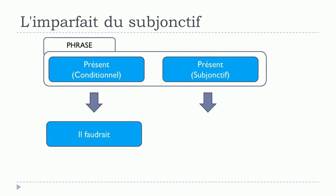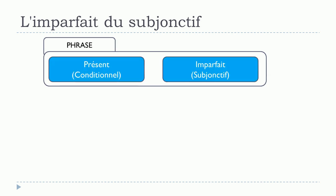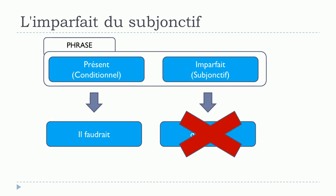In most of the cases people will stay with présent du conditionnel and then présent du subjonctif. So for example: il faudrait qu'il parle. You can see that il faudrait is le présent du conditionnel, and qu'il parle is le subjonctif présent. People tend to prefer this over using l'imparfait du subjonctif in the subordonnée.